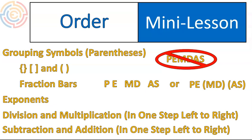When I grew up in Canada, we used to call it BEDMAS — brackets, exponents, division, multiplication, addition, subtraction. You might think that's changing the order of the division and multiplication, but as you come to understand this, I think you'll find that the order of multiplication and division doesn't matter, as long as that's one step. The same with addition and subtraction — you could switch those letters and it wouldn't matter. I'll show you why as we go through this lesson.